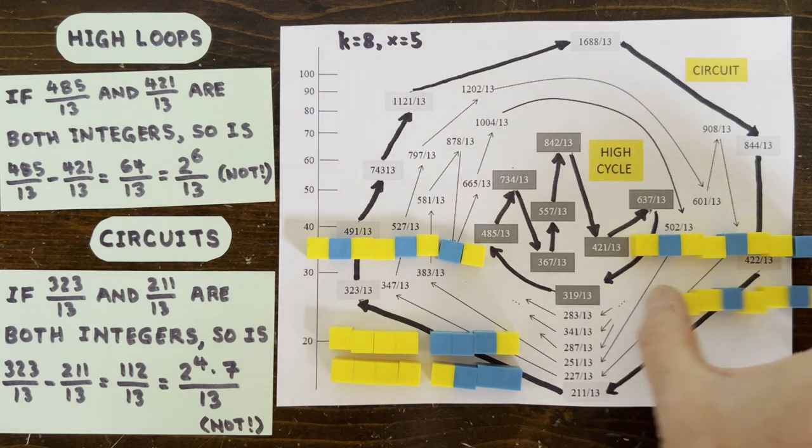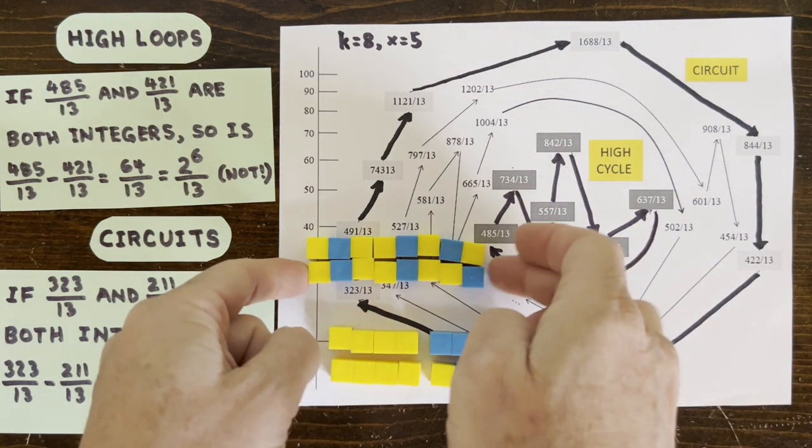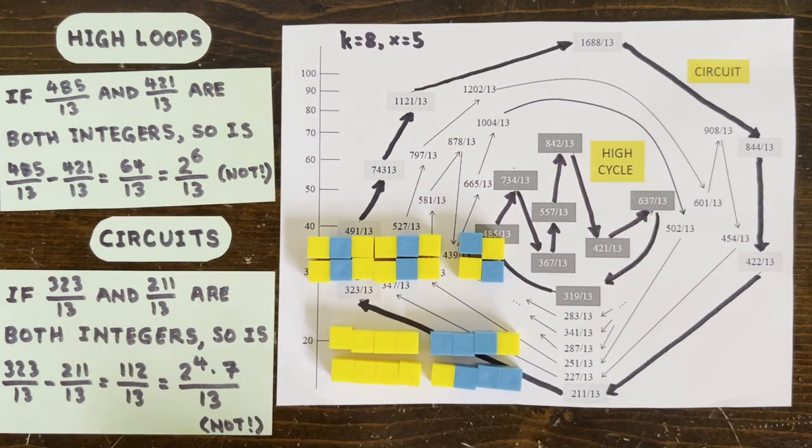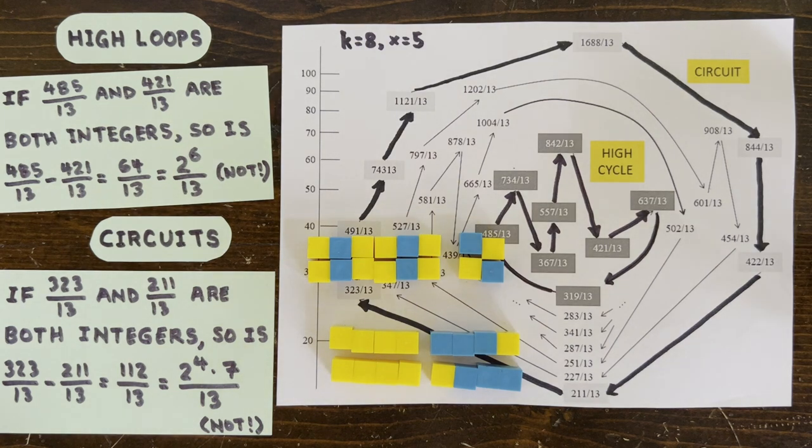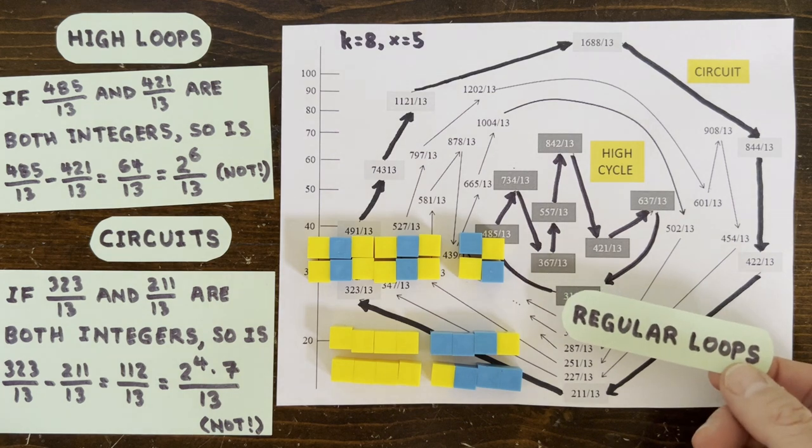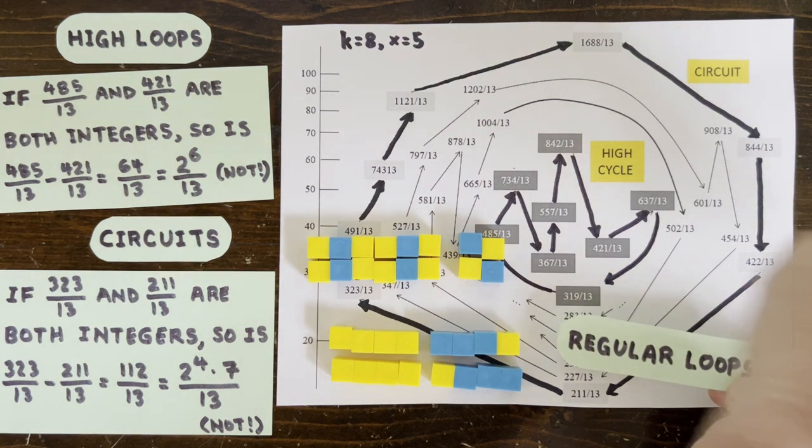With the high loop, our magical pair of members have trajectories that match for the first six moves, which gives us 2 to the 6th over 13. And with this long up-up-down loop, these two members also have similar trajectories. They both start with a long repeated sequence of up-up-downs.